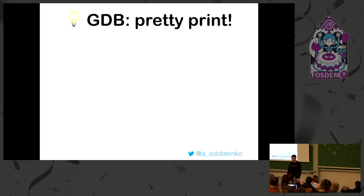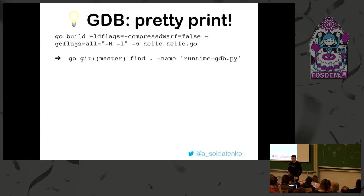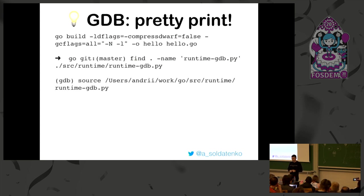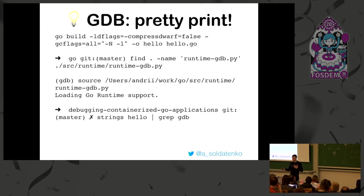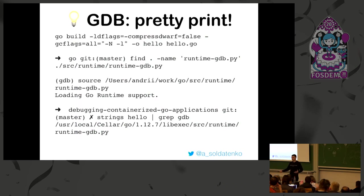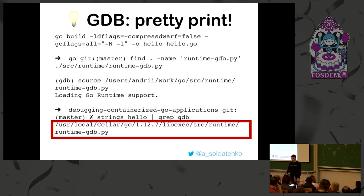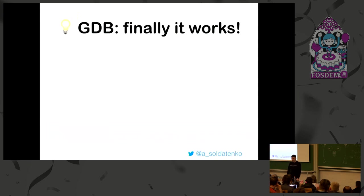You also need to source a pretty-printer. Here's one trick: if you find your binary and run 'strings' and 'grep', you can find that inside each Go binary there is a Python file which helps us do some interactive tips for GDB. It's Python inside every Go binary! We just bring it in. And finally it works - you can step, set breakpoints. It looks not as fancy as Delve, but still you can debug. If you're familiar with GDB, you can use it.